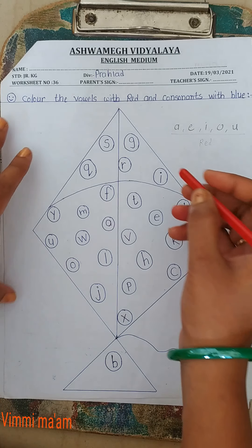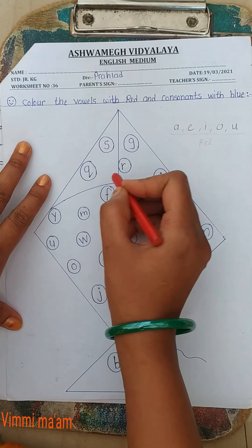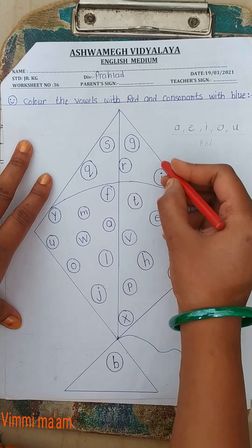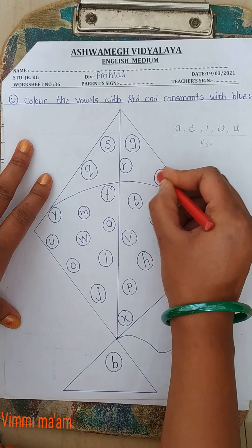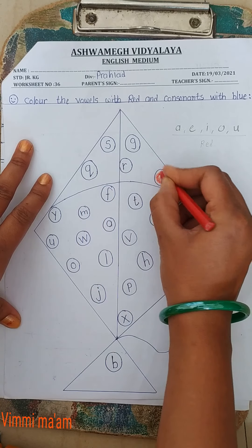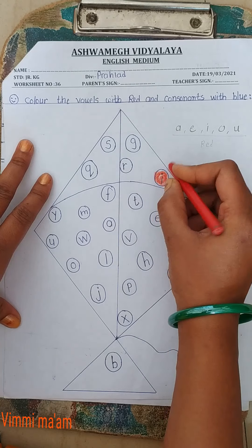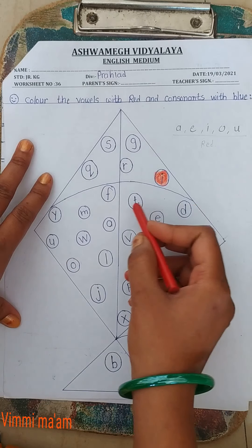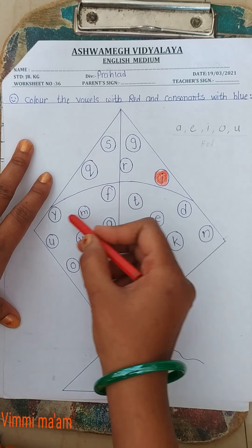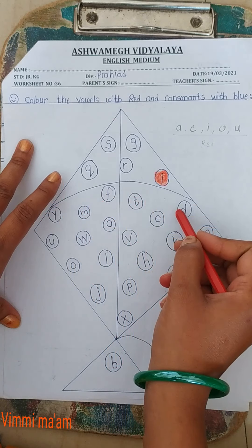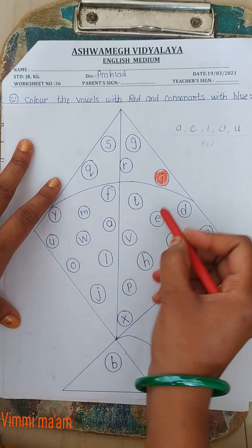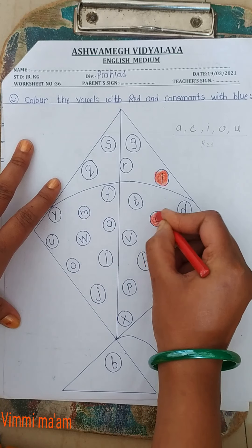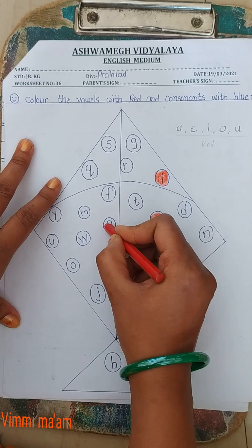Where is a vowel? This 'I' is a vowel, so fill color red. Then where is the other? Y, M, F, D, D, E. Yes, E is also a vowel.